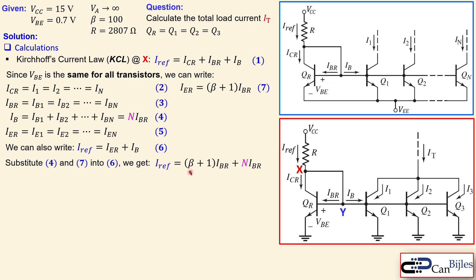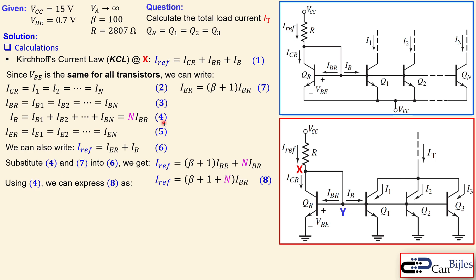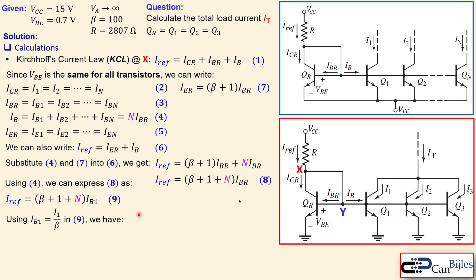After substitution, we get an expression from equations seven and four with only IBR as the unknown. Combining terms gives equation number eight. Using equation four again, we can express equation eight in terms of IB1, since IBR equals IB1 for matched transistors — equation nine. The relationship between collector current and base current of Q1 is defined by beta: I1 equals beta times IB1. Substituting equation nine gives a relationship between the reference current and the individual load current.